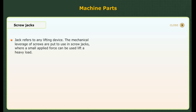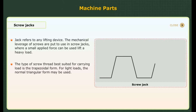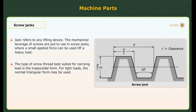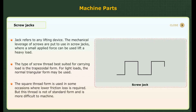Screw jacks. Jack refers to any lifting device. The mechanical leverage of screws is put to use in screw jacks, where a small applied force can be used to lift a heavy load. In many cases, the actuation may be motorized — electric or pneumatic operation. The type of screw thread best suited for carrying load is the trapezoidal form. For light loads, the normal triangular form may be used. The square thread form is used in some occasions where low friction losses are required, but this thread is not of standard form and is more difficult to machine.